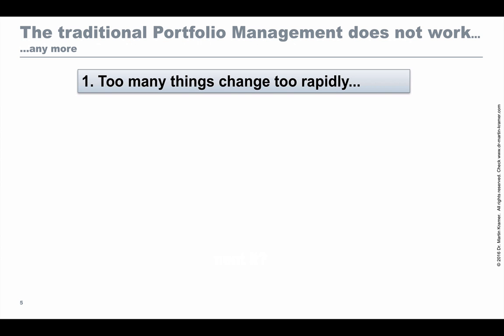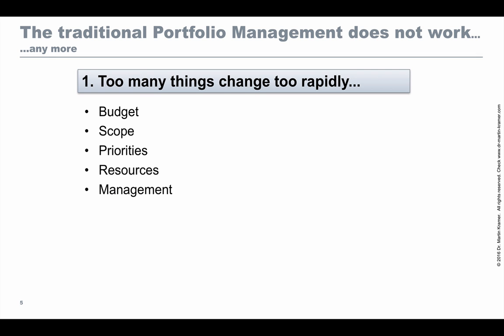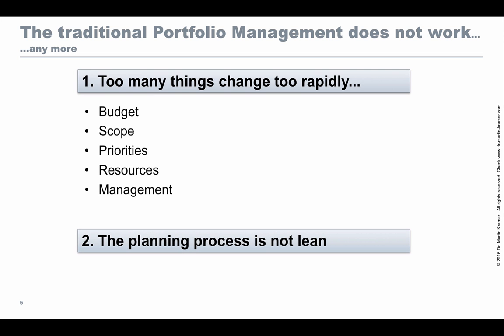The traditional portfolio management does not work — well, at least it does not work anymore. I have basically two objections. First, too many things change just too rapidly: budgets are changing, the scope of a portfolio is changing, priorities are changed around sometimes on a weekly basis, resources are coming and leaving, and even the management function is changing. Moreover, the planning process is not lean.